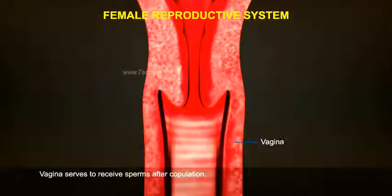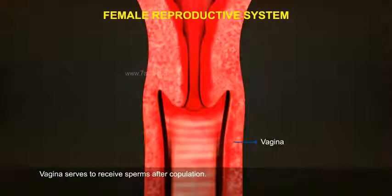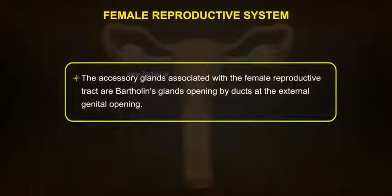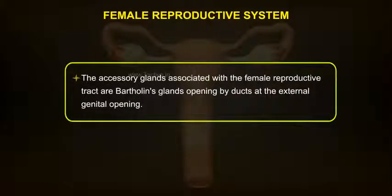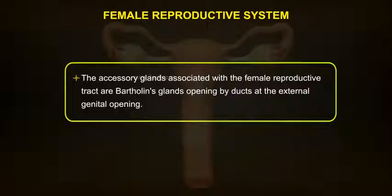The vagina serves to receive sperms after copulation. The accessory glands associated with the female reproductive tract are Bartholin's glands, opening by ducts at the external genital opening.